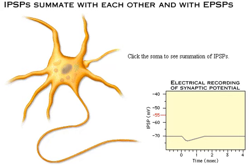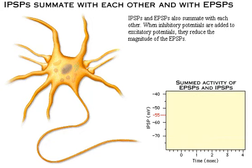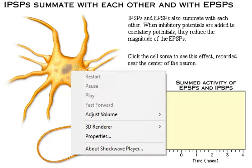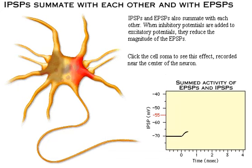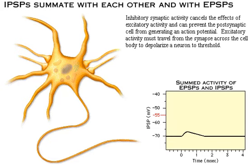Click the soma to see summation of IPSPs. Inhibitory post-synaptic potentials and excitatory post-synaptic potentials also summate with each other. When inhibitory potentials are added to excitatory potentials, they reduce the magnitude of the excitatory post-synaptic potentials. Click the cell soma to see this effect recorded near the center of the neuron. Inhibitory synaptic activity cancels the effects of excitatory activity and can prevent the post-synaptic cell from generating an action potential.